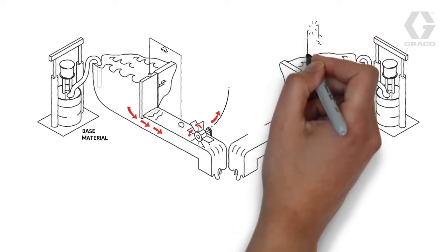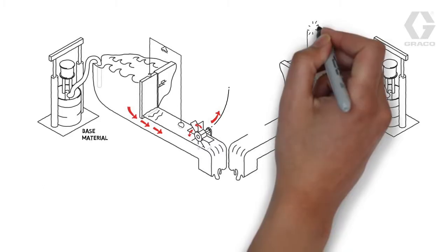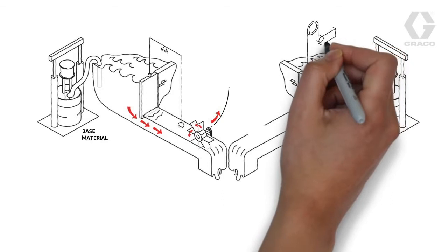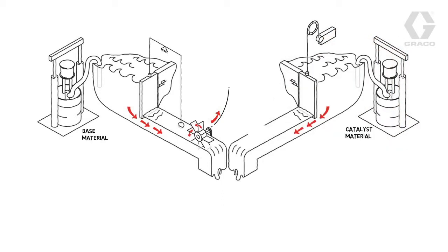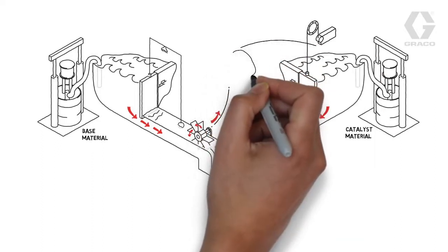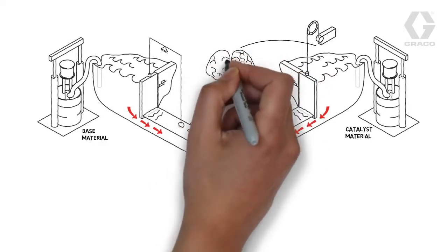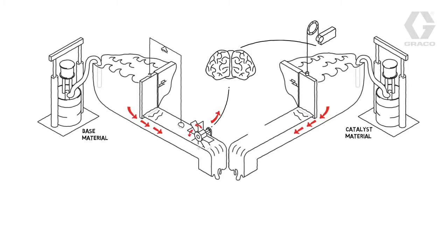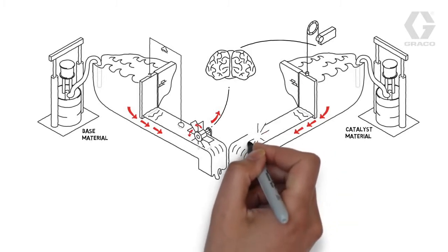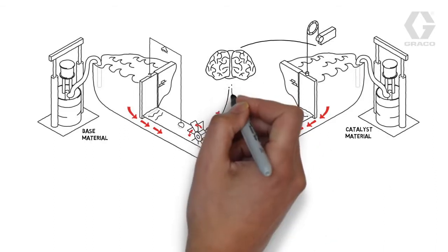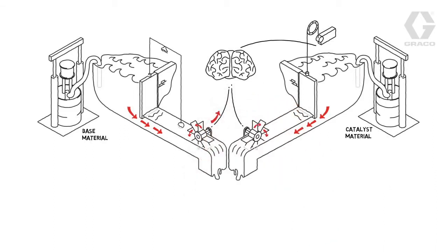Now to the catalyst side. The catalyst is controlled by a fluid regulator that is controlled by a special device called a voltage to pressure device, or V to P for short. The V to P is controlled by the fluid control module, or FCM. The FCM acts like the system's brain. The catalyst side also has a flow meter. The flow meter sends information on how much catalyst material is flowing to the FCM.